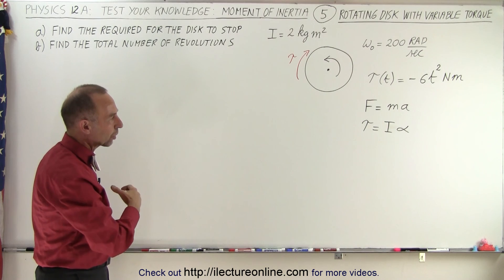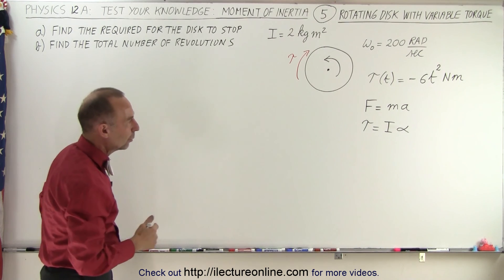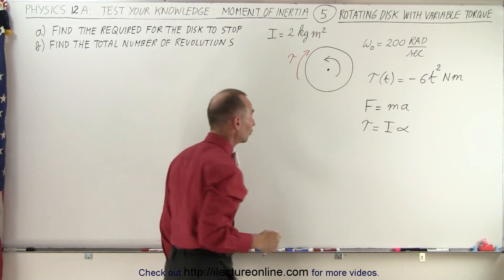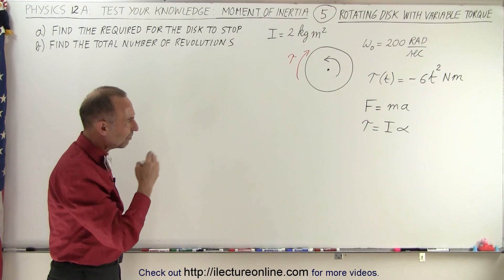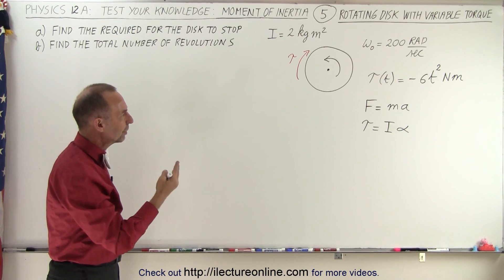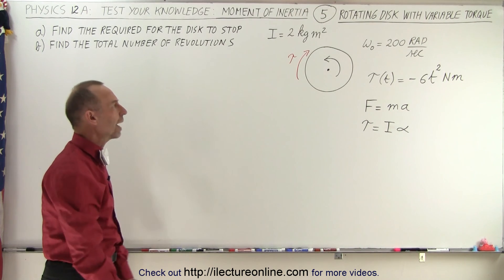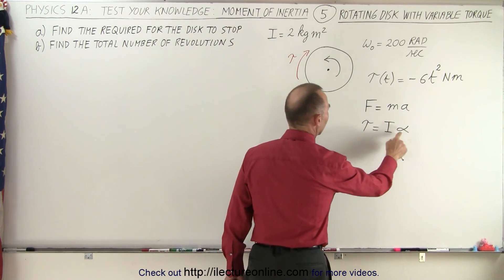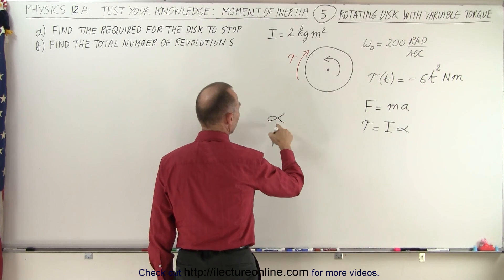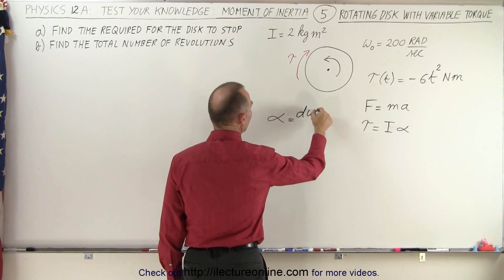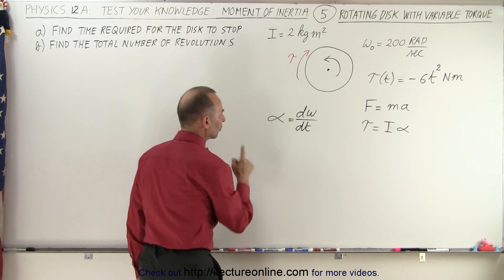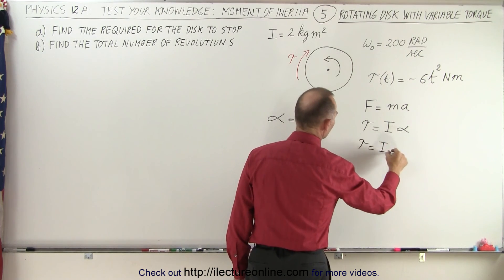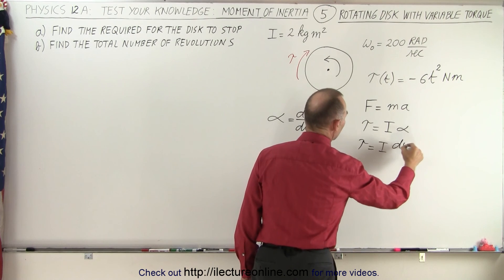We can see that there's a relationship between the torque and the angular acceleration, and the proportionality constant is I, which is a constant 2 kilogram meters squared. We need to find what it will take for the disk to slow down to a complete stop. To do that, we need the relationship between torque and acceleration. By definition, angular acceleration alpha is equal to the change in omega divided by time. So we can rewrite this as torque equals I times dω/dt.